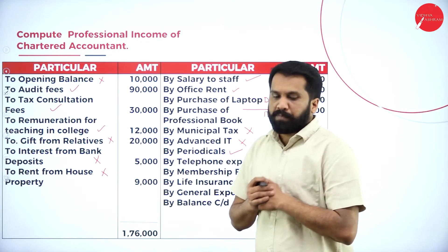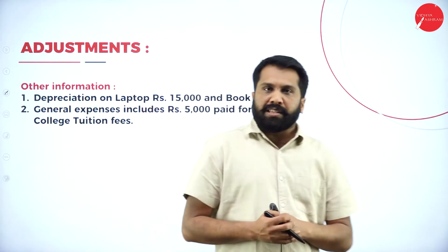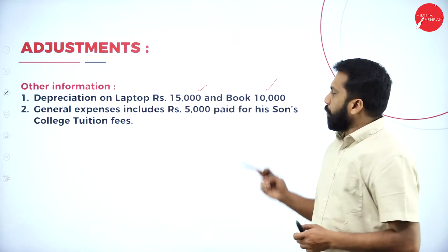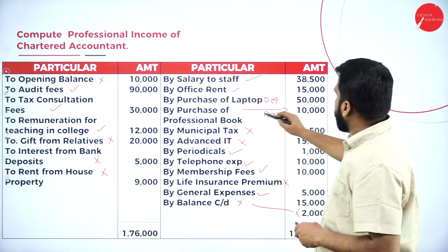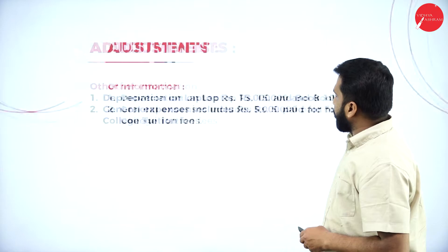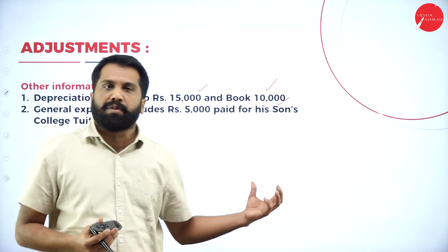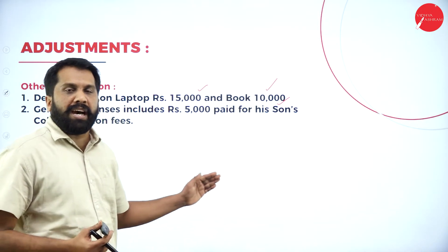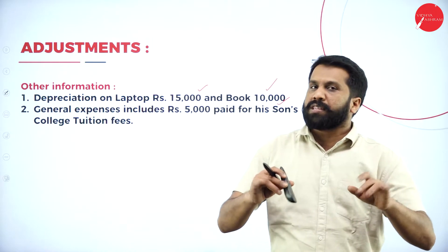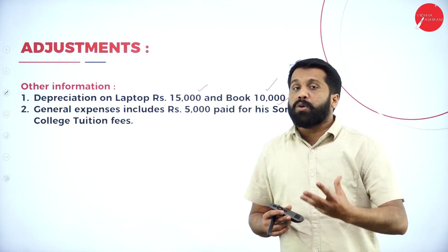These are the information we have in the question. We have two adjustments in this problem: depreciation on laptop is 15,000 and on books is 10,000. The laptop value is 50,000 and depreciation is 30%, so 15,000. For books, there are two types of depreciation — 60% if the books are used for more than one year, and 100% if used for only one year. Here, the book value is 10,000 and depreciation is also 10,000 (100%).